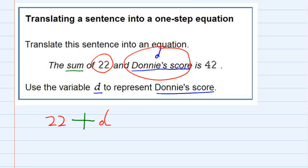So we've got the sum of 22 and D, Donnie's score. Is, is is the important part because that's our equal sign.